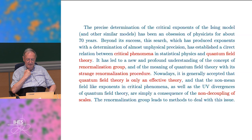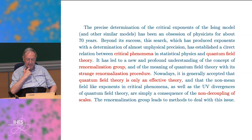Nowadays, it is generally accepted that quantum field theory is only an effective low energy theory. The non-mean-field critical exponents, as well as the ultraviolet divergence of quantum field theory, are simply a consequence of the non-decoupling of scales. The renormalization group leads to methods to deal with this issue.